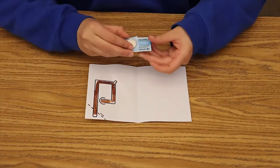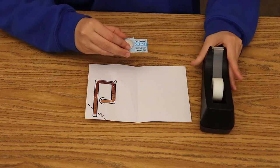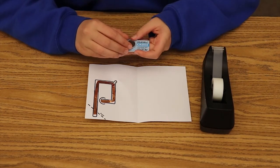After finishing the taping process, take the battery and the scotch tape, and place the negative side on the copper tape.